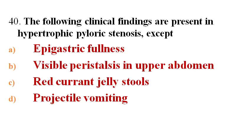Next question: The following clinical findings are present in hypertrophic pyloric stenosis except? Options A. Epigastric fullness, B. Visible peristalsis in upper abdomen, C. Red currant jelly stools, D. Projectile vomiting.